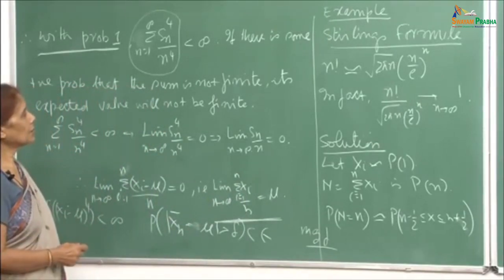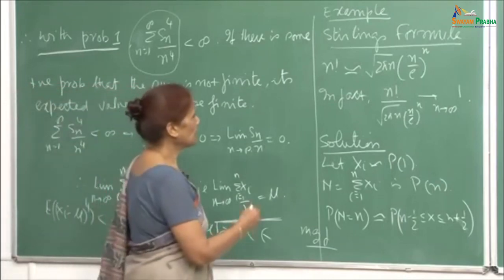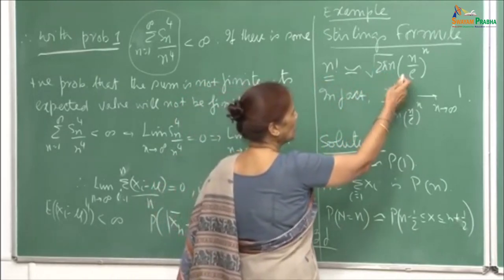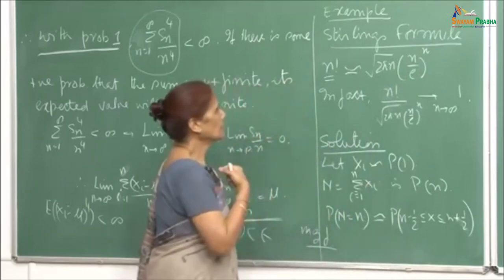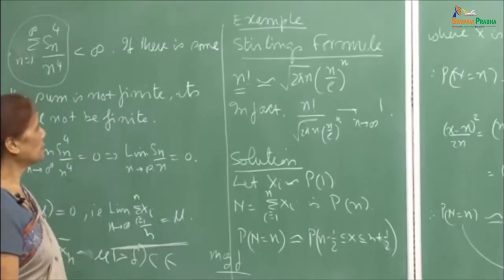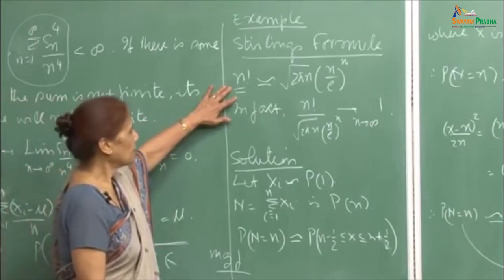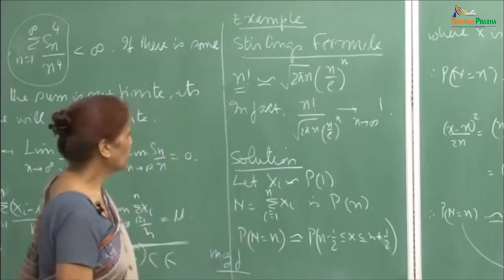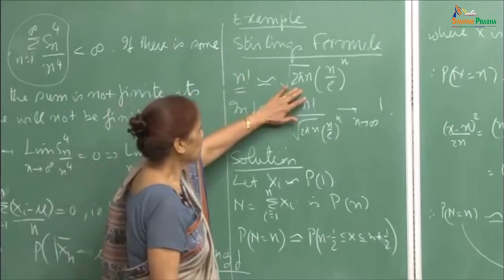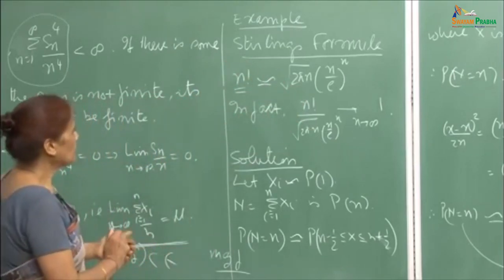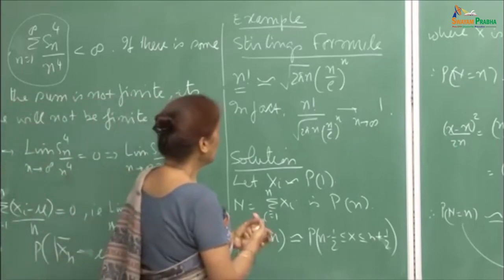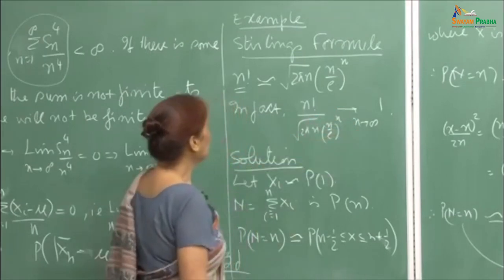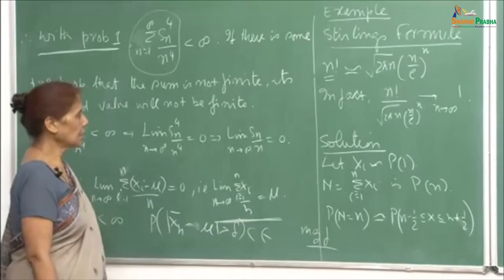Now let us look at Stirling's formula. We know that n! can be approximated by sqrt(2πn) · (n/e)^n. This approximation is very useful in many limiting situations, allowing us to replace n! and get good results. In other words, n! / (sqrt(2πn) · (n/e)^n) → 1 as n → infinity.